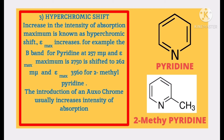For example, the B band for pyridine at 257 millimicrons with epsilon maximum of 2750 is shifted to 262 millimicrons and epsilon maximum of 3560 for 2-methylpyridine. The introduction of an auxochrome usually increases the intensity of absorption.